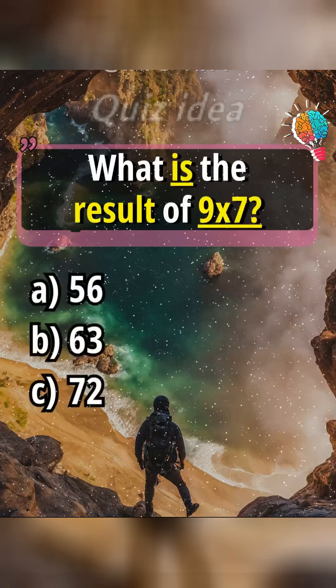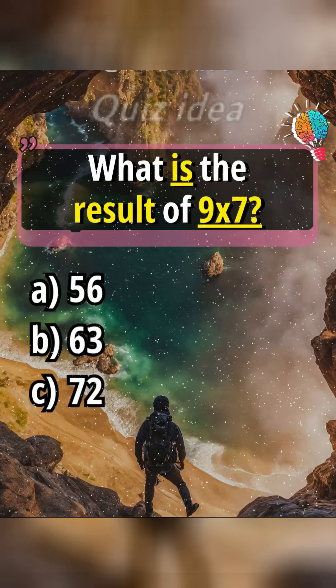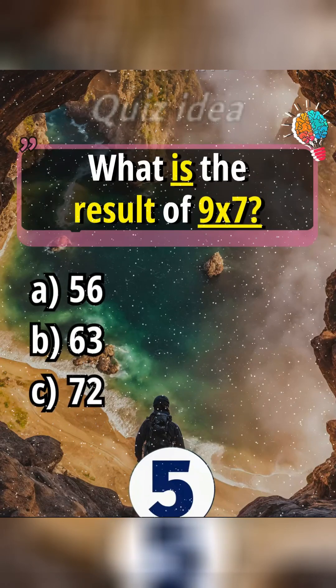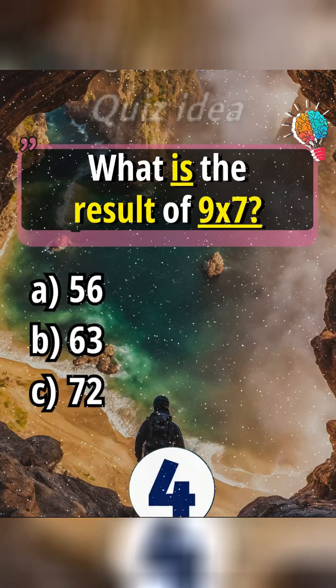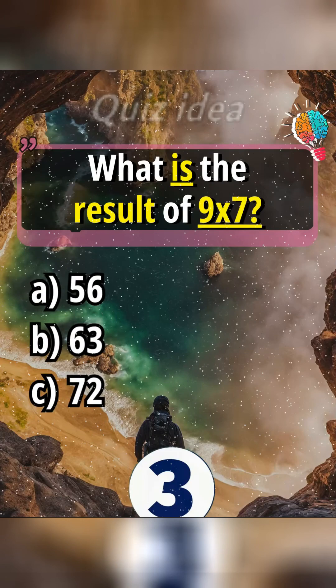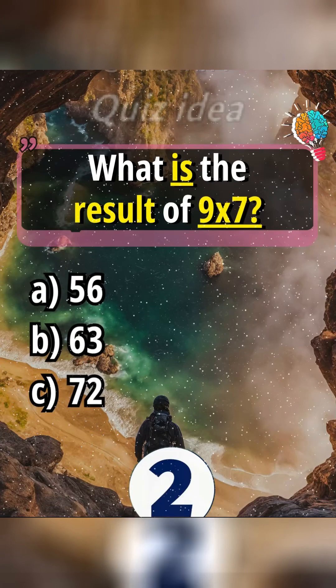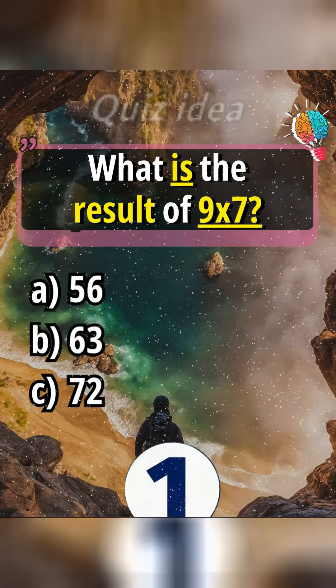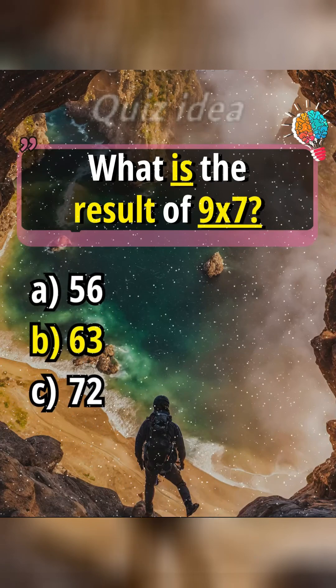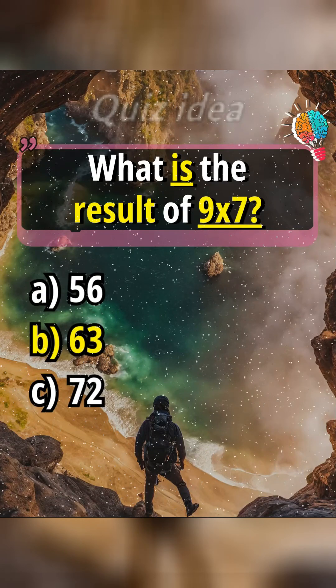What is the result of 9 times 7? Answer B, 63.